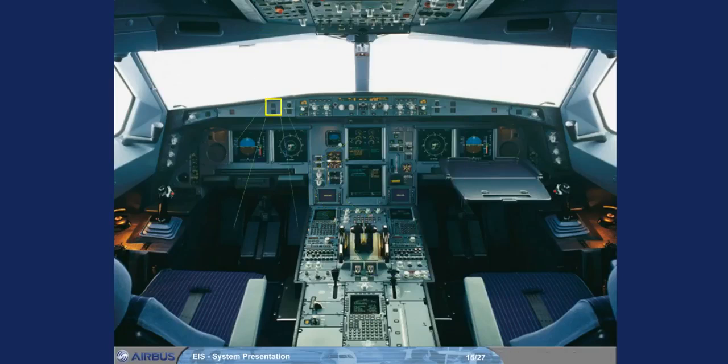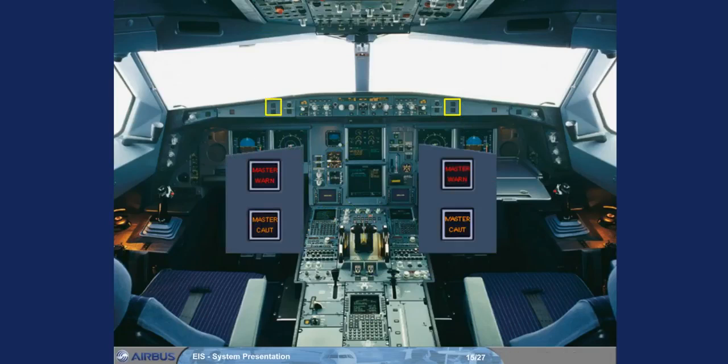In front of each pilot there are two attention-getters: a red master warning and an amber master caution. As a further means of getting the pilot's attention, there is a loudspeaker on each side of the cockpit for oral alerts and voice messages. Note that the loudspeakers can also be used to listen to radio communications and the intercom.